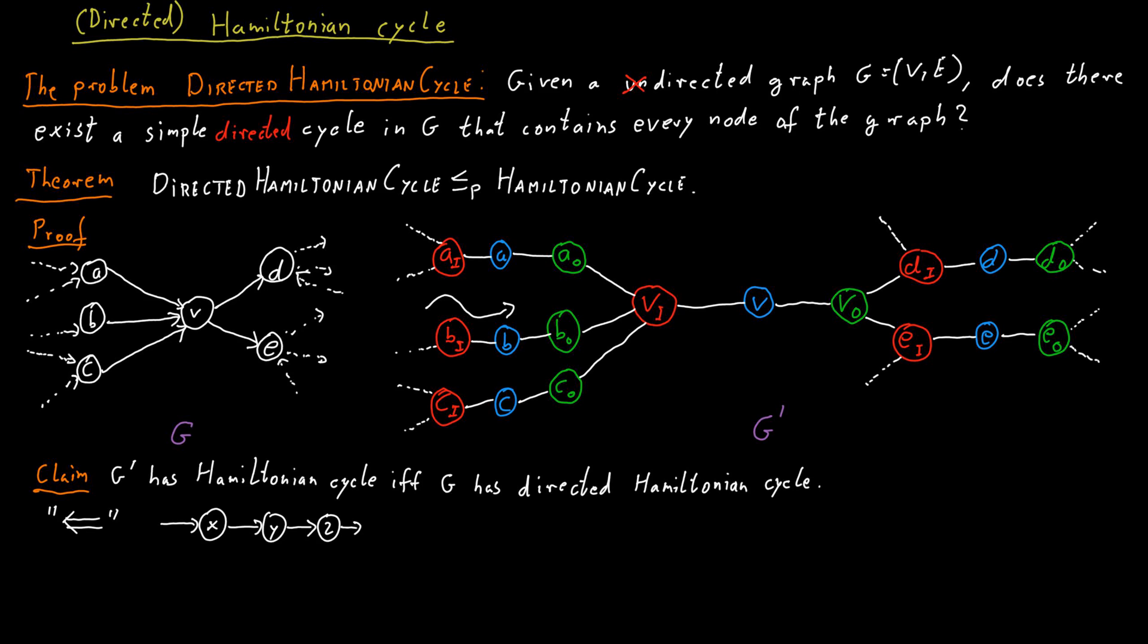Then in our undirected graph, we would find a Hamiltonian cycle by visiting these vertices in the same order and splicing in these incoming and outgoing vertices on the way.